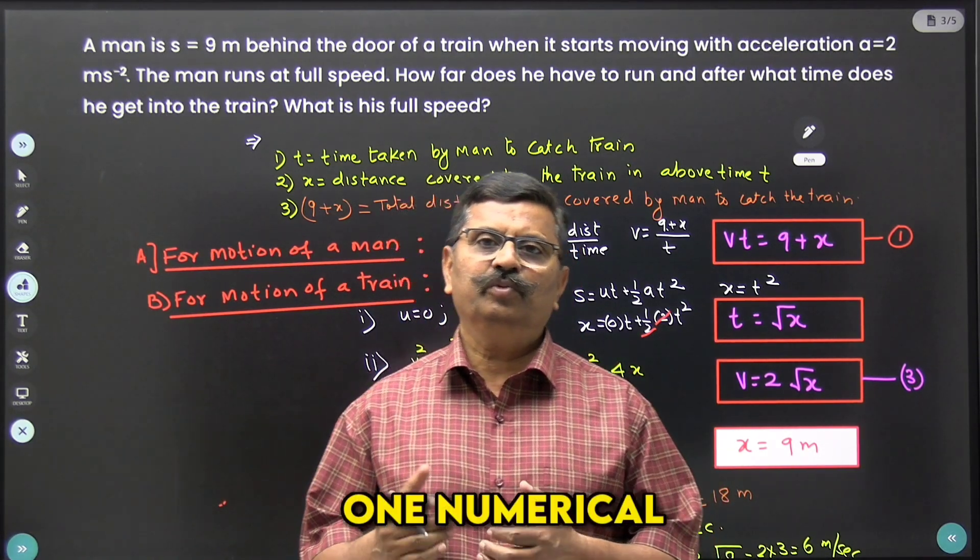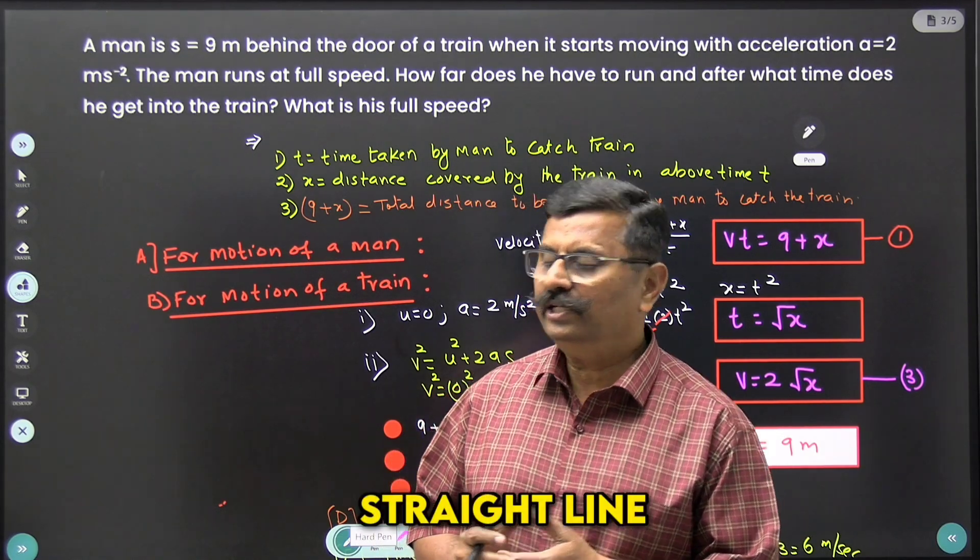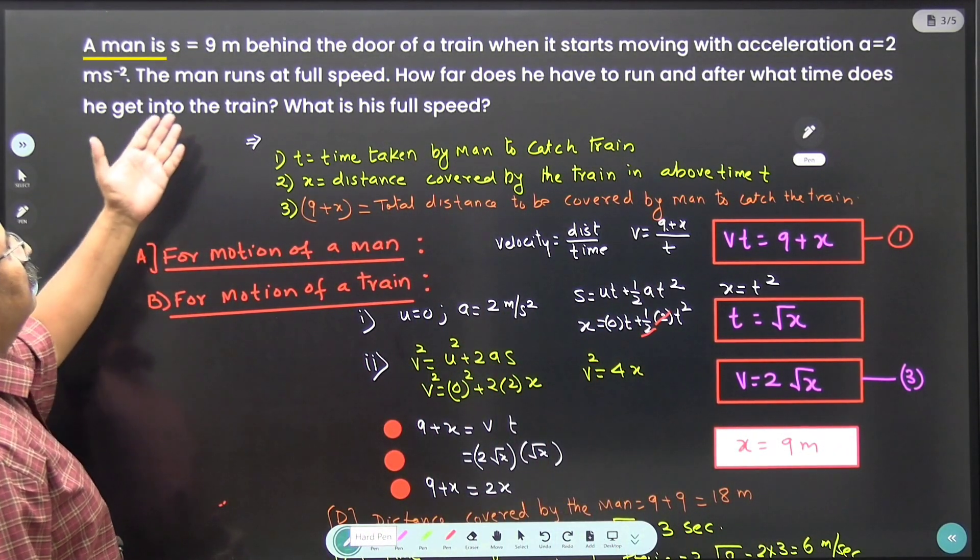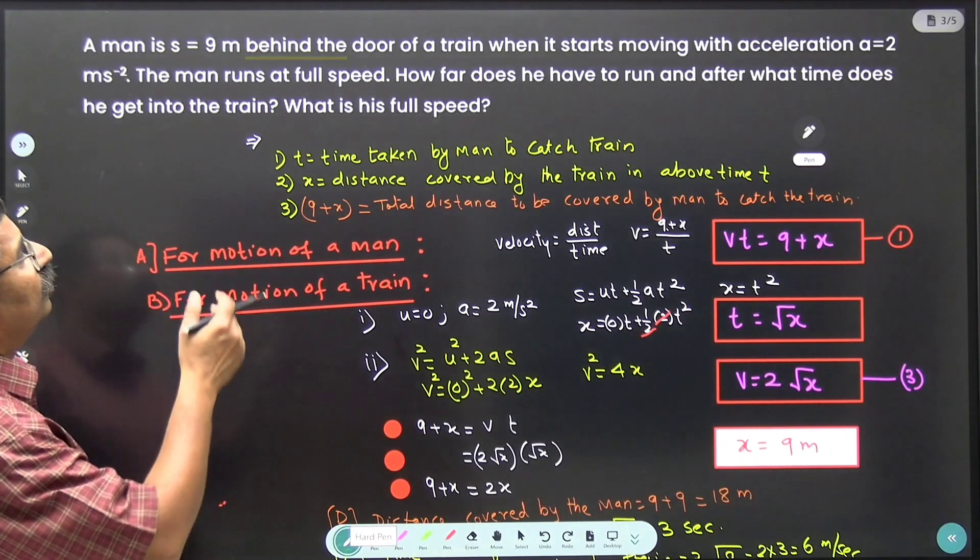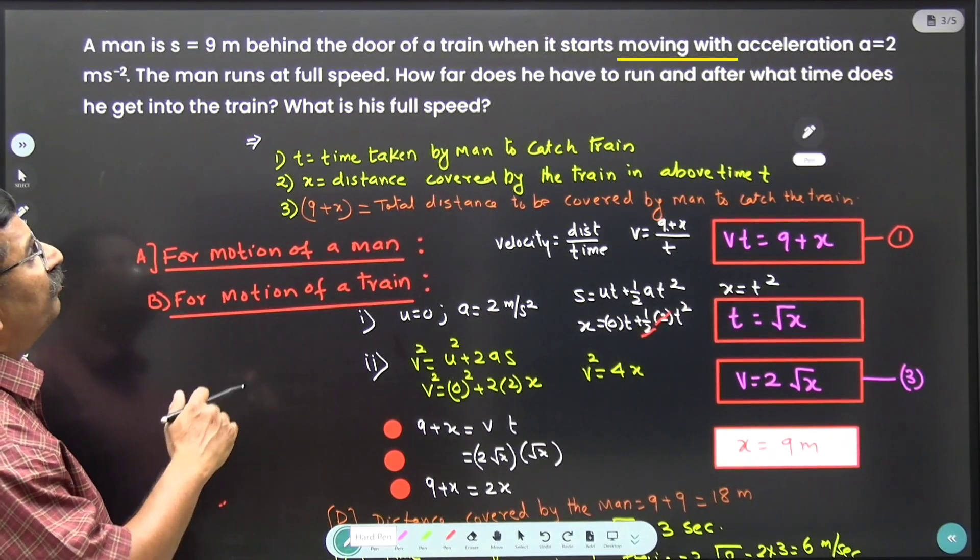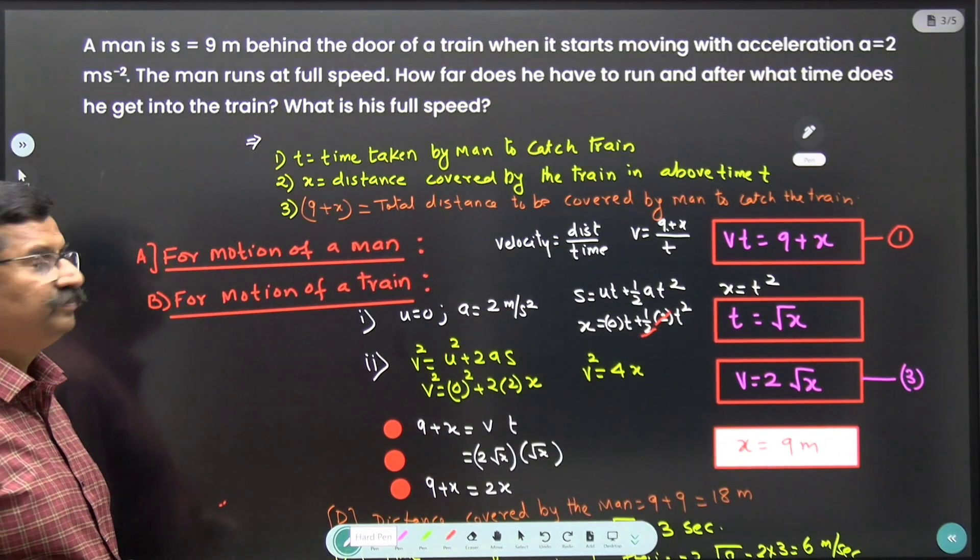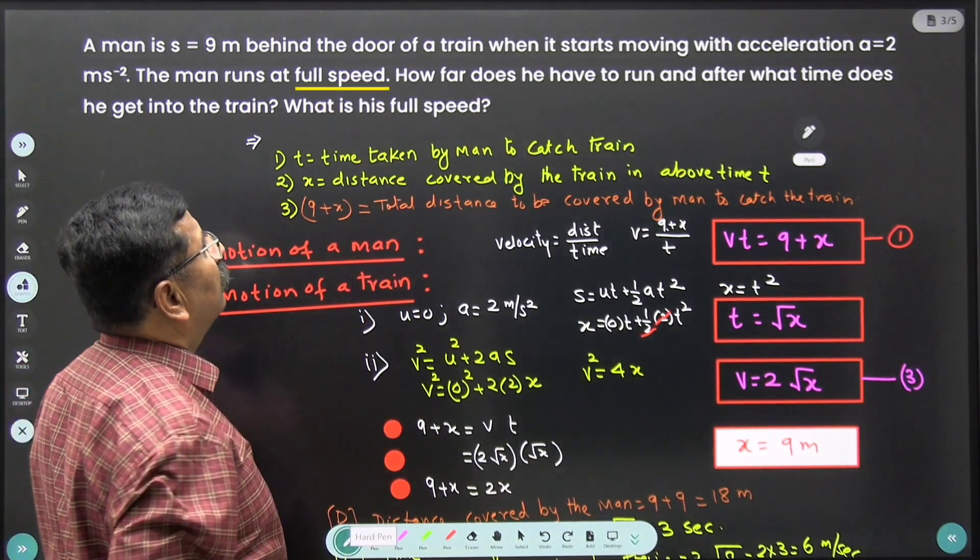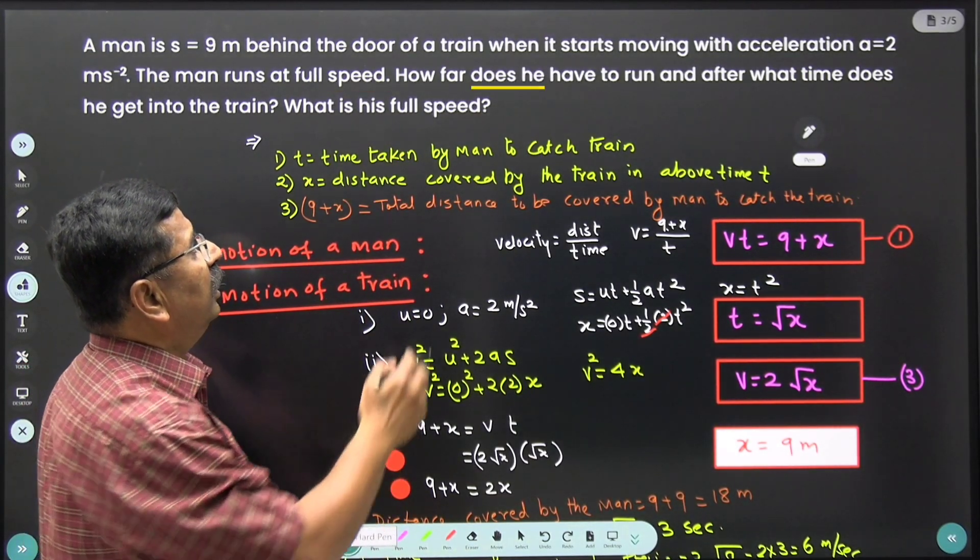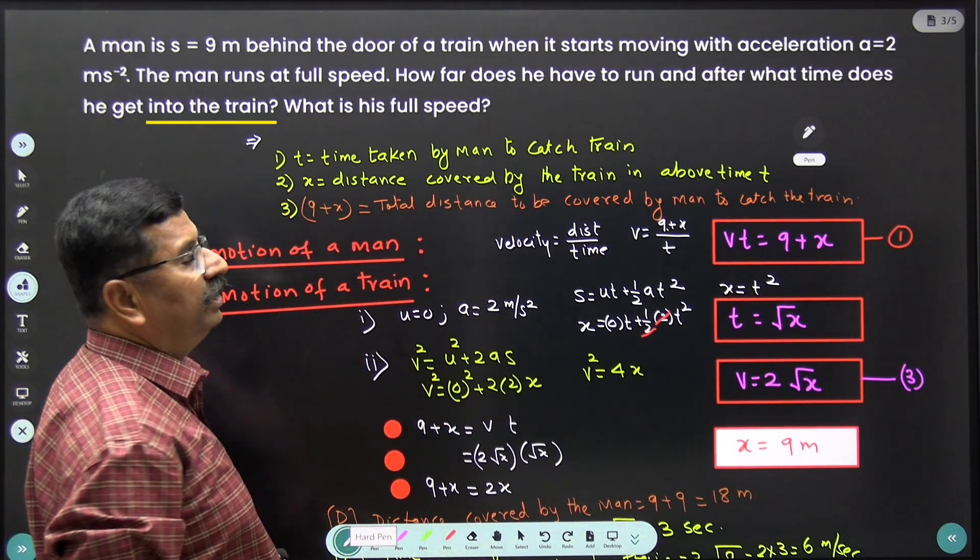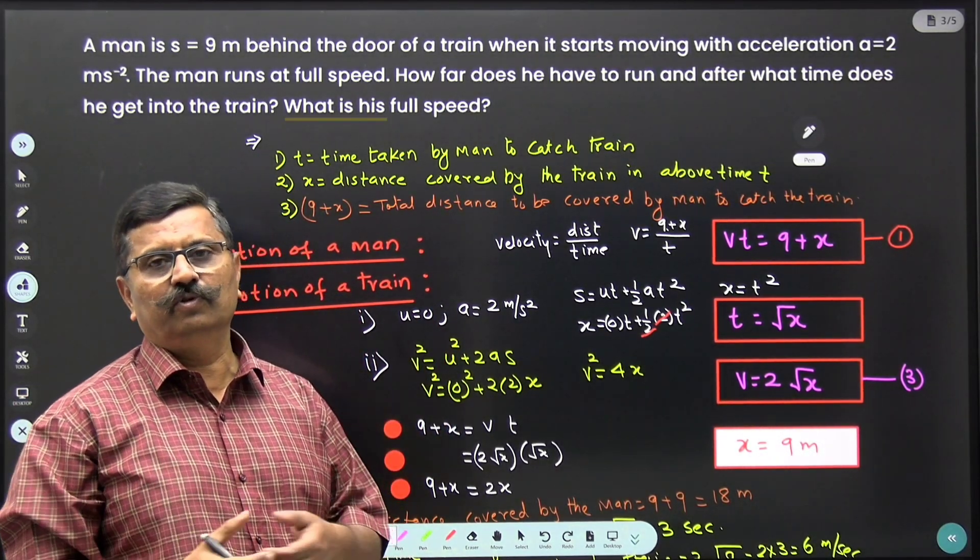Today we will be doing one numerical from the motion in a straight line. Let's read the numerical. A man is s equal to 9 meter behind the door of the train when it starts moving with acceleration a equal to 2 meter per second square. The man runs at full speed. How far does he have to run and after what time does he get into the train and what is its full speed.